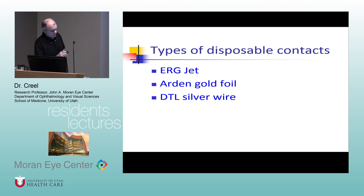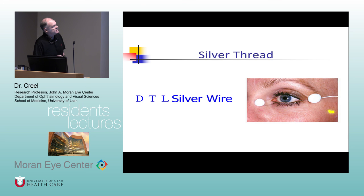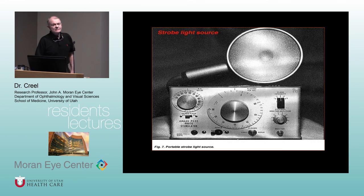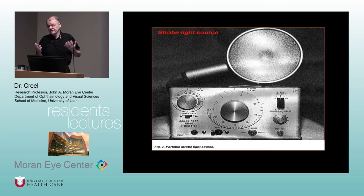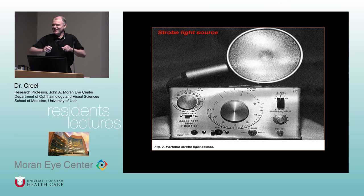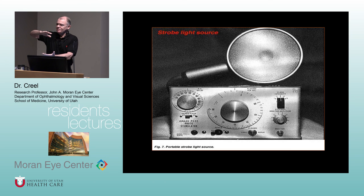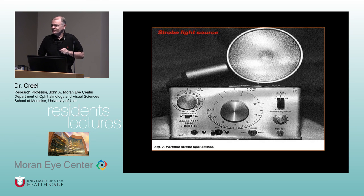These are some of the types of disposable: ERG Jet, DTL silver, Arden gold foil. Until thirty years ago most people used strobe lamps — the old strobe lamp used in EEG recording for photic driving. This is what I was trained to use 50 years ago. Patients were tested on an examining table lying down, with a strobe lamp on an articulated arm placed a measured distance from the eyes, and color filters placed over it.